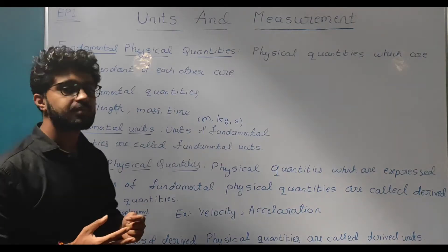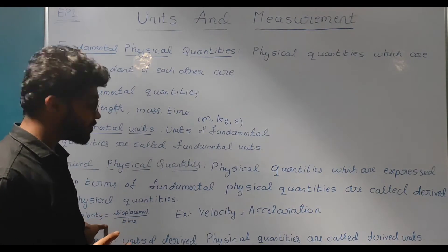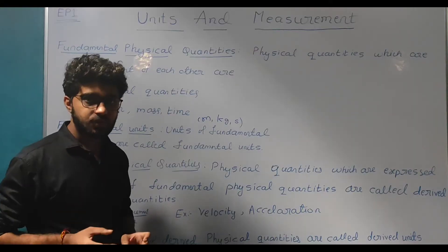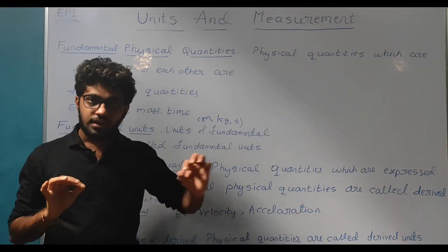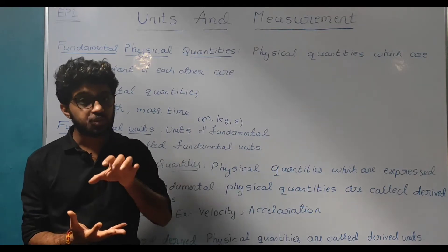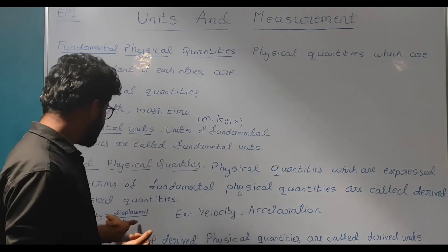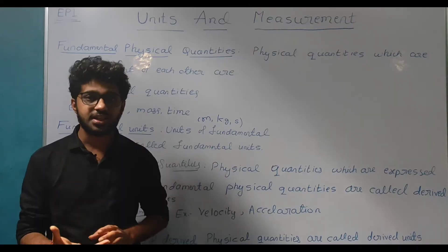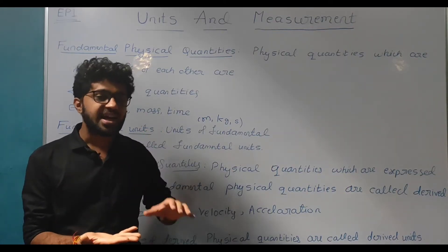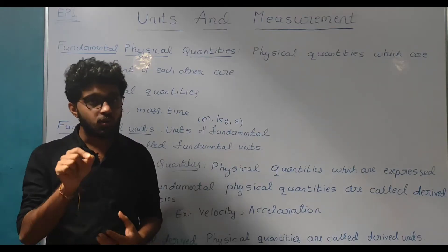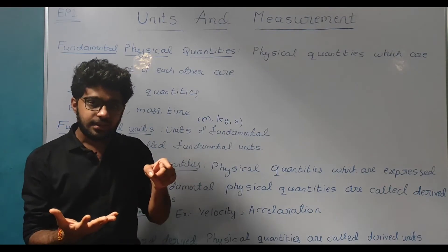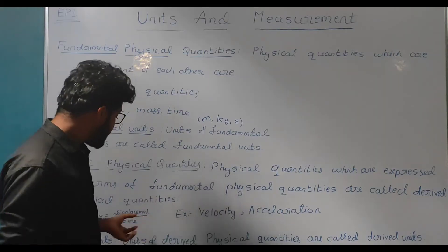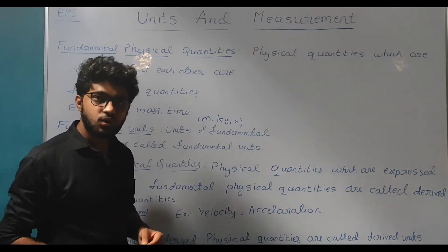Here is an example of a derived physical quantity: velocity is equal to displacement divided by time. To calculate velocity, we need displacement and time. Displacement is essentially length, which is a fundamental physical quantity, and time is also a fundamental physical quantity. So to calculate velocity, we combine two fundamental physical quantities — length and time.